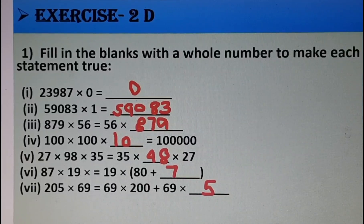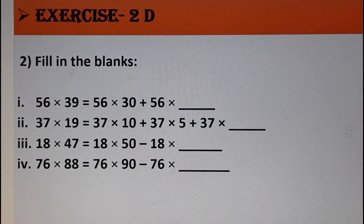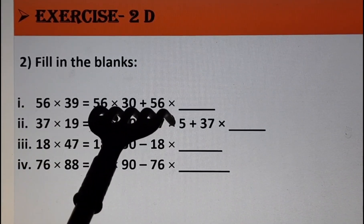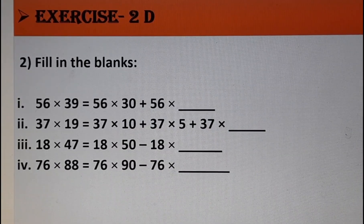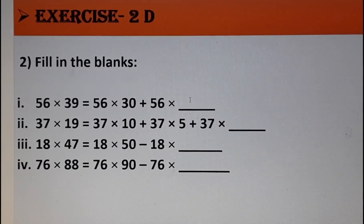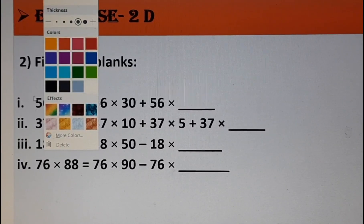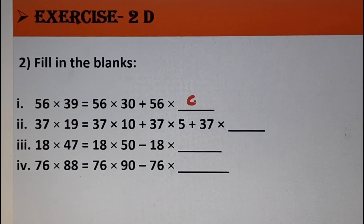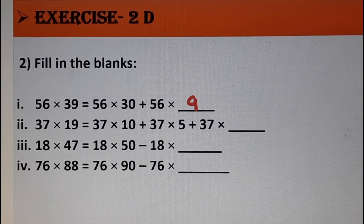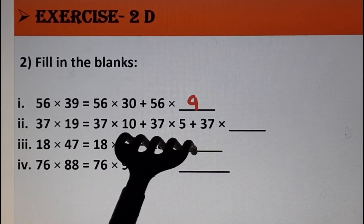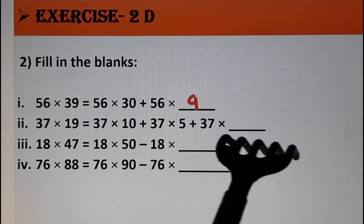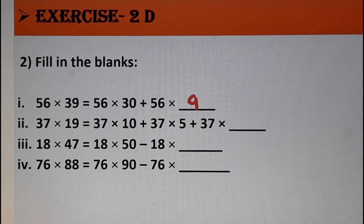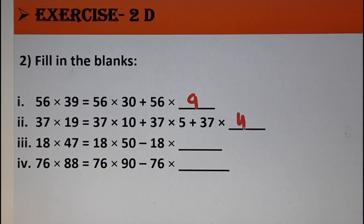Now question 2, again fill in the blanks. First: 56 × 39 = 56 × 30 + 56 × ___. This is the distributive property of multiplication over addition, and 39 = 30 + 9, so we put 9. Next: 37 × 19 = 37 × 10 + 37 × 5 + 37 × ___. Since 10 + 5 = 15 and we need 19, four more is left, so we write 4.